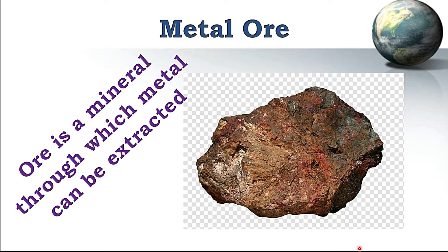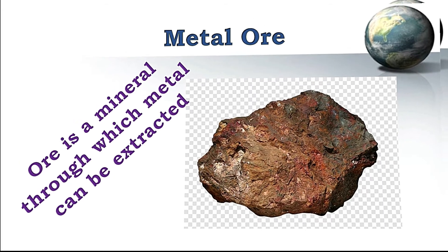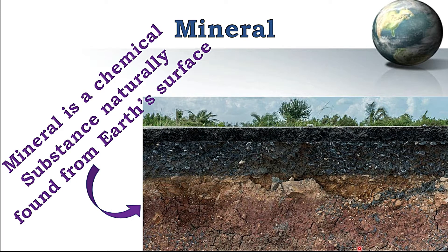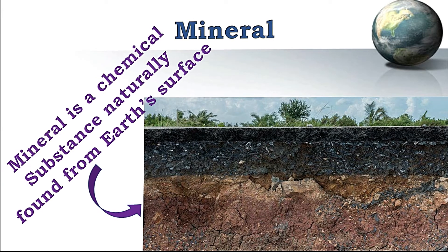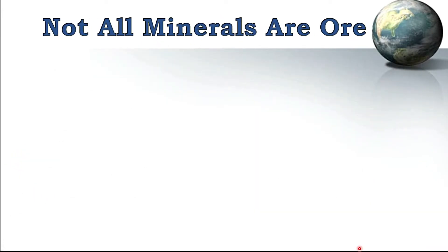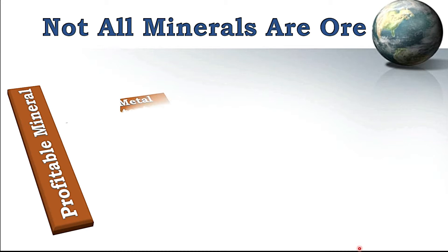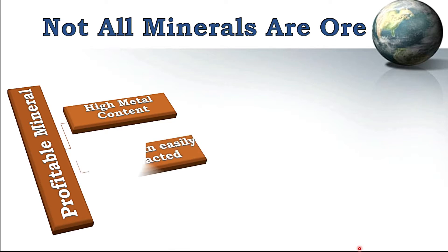Now what is a metal ore? Metal ore is actually a mineral through which metal can be extracted or obtained through different metallurgical processes. A mineral is a chemical substance naturally found from the earth's surface in the form of rocks. But not all minerals are ore — only those minerals can be used as ore which are profitable, meaning they have a high content of metal that can be extracted and the extraction process is simple and easy.